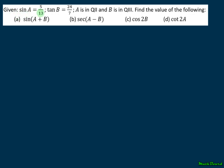Given sin A equals 5 over 13, tangent B equals 24 over 7, A is in quadrant 2, B is in quadrant 3. Find the value of the following.